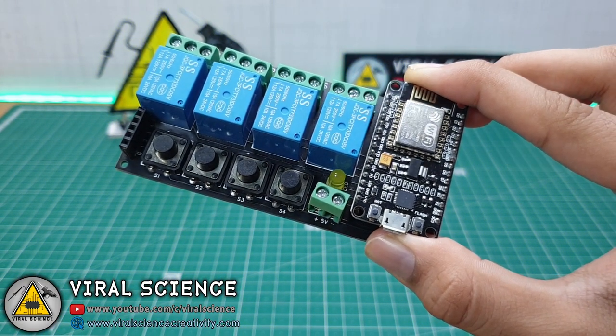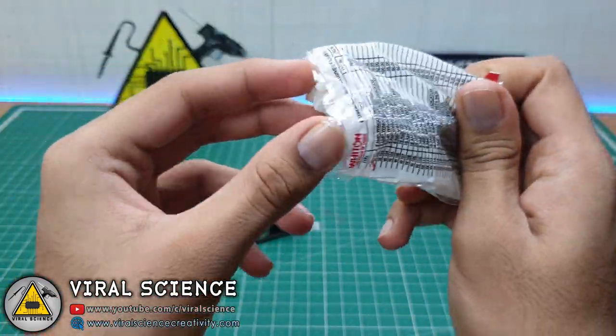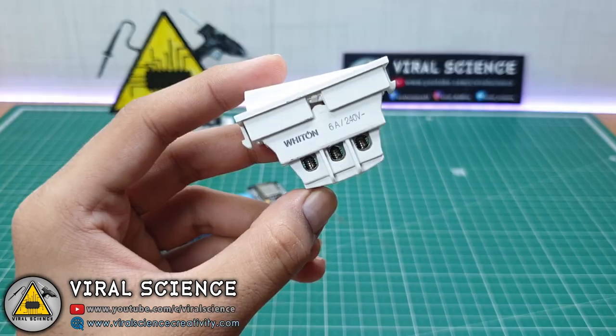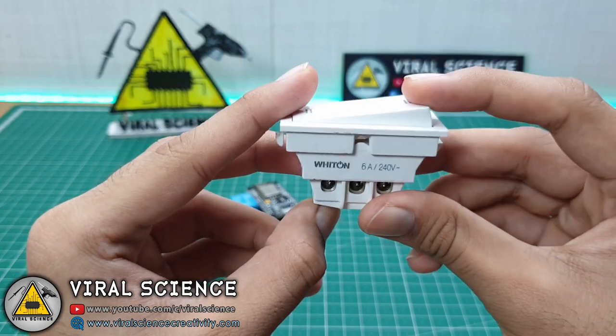Now our PCB is ready with the program uploaded in it. Next thing you will need is this 2-way switch. It has 3 pin connections.